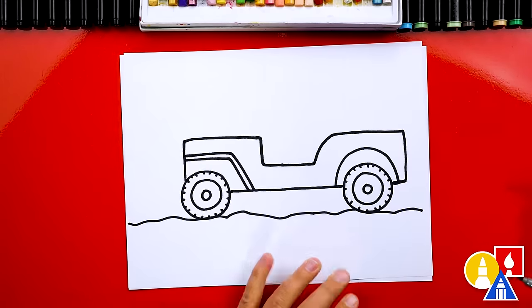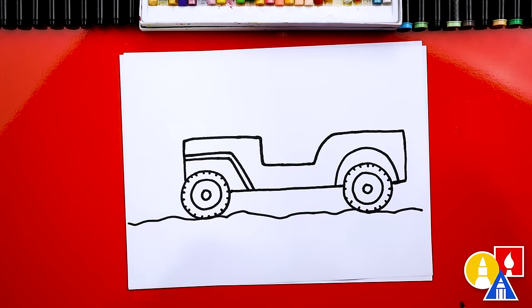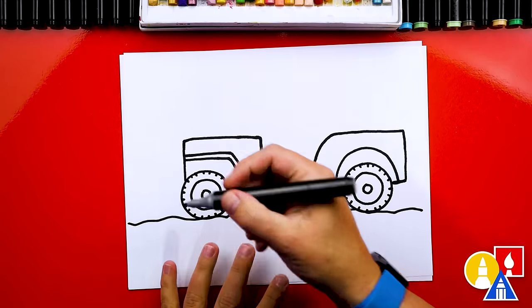We're gonna connect to the line back here. We need to draw it a little taller. That's kind of the main shape of our Jeep, our Army Jeep. It looks really cool. Let's add more details.